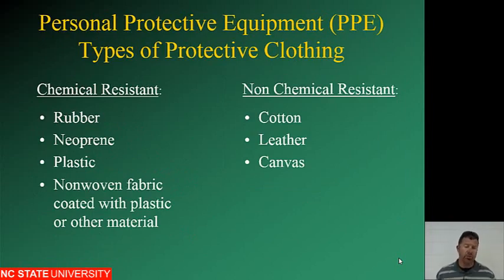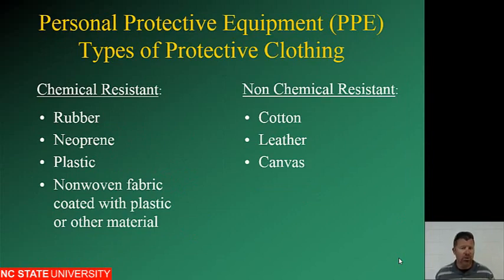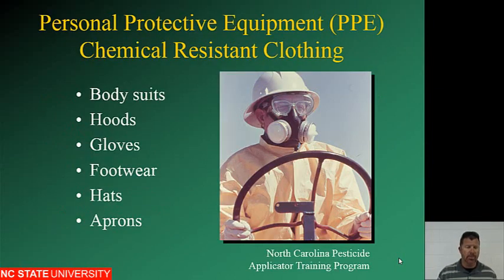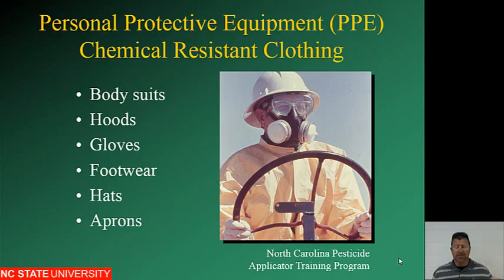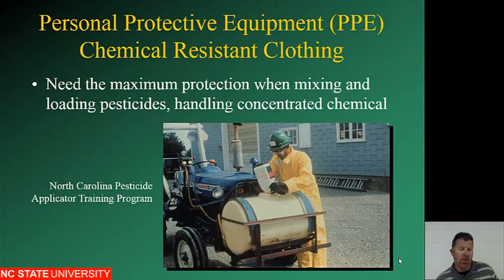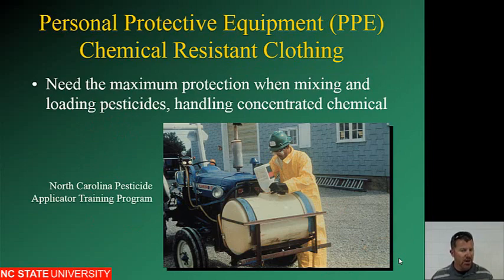PPE types — protective. Chemical resistant types include rubber, neoprene, plastic, non-woven fabric coated with plastic or other material. Non-chemical resistant types are cotton, leather, and canvas. I do not like cotton gloves — I don't like pruning with them and I'm certainly not going to apply pesticides with them. PPE items include body suits, hoods, gloves, footwear, hats, and aprons. Maximum protection is needed when mixing and loading pesticides or handling concentrated chemicals — that's when you're most vulnerable. The worker should have gloves, coveralls, and goggles for splash protection.